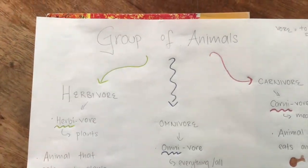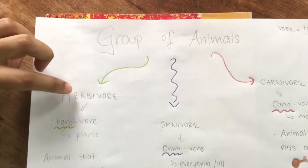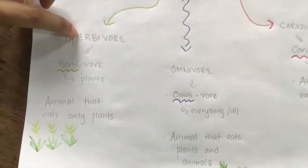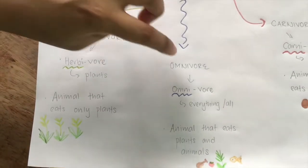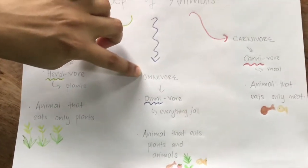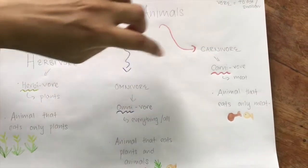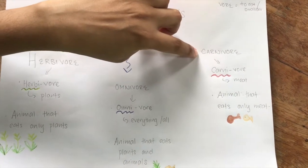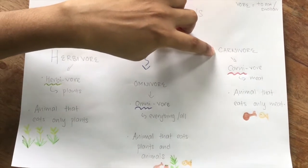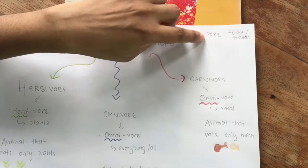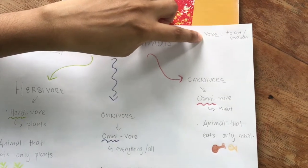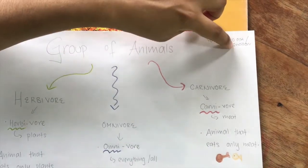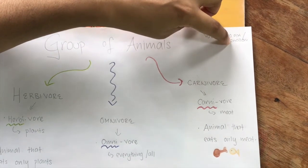They are called Herbivores, Omnivores, and Carnivores. 'Vore' means to eat or swallow.